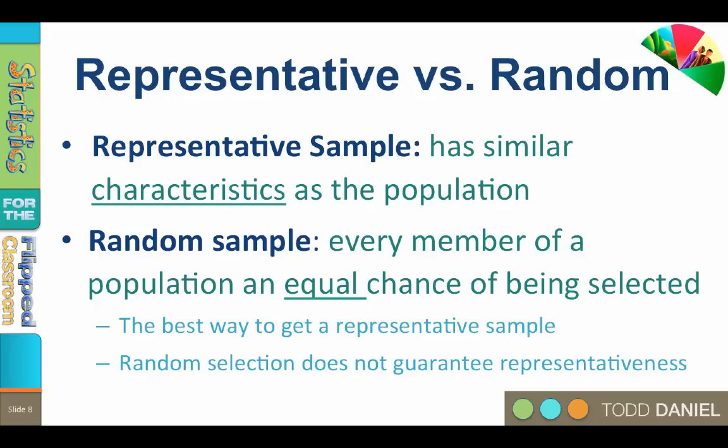Later we may use random assignment — for example, when we split our randomly selected sample into two randomly assigned groups. But because of the way that randomness works, sometimes despite our best efforts, our random selection is the best way to get a representative sample, but it does not guarantee a representative sample.